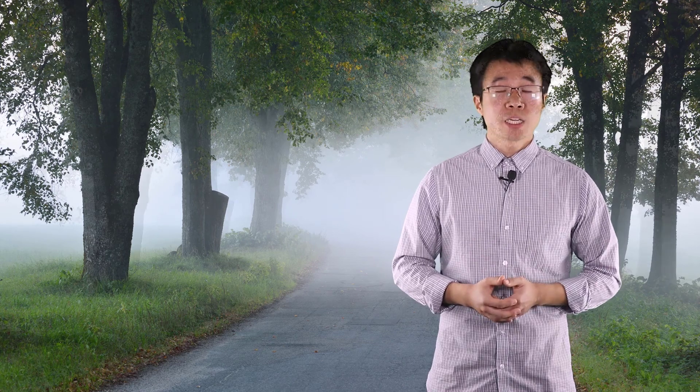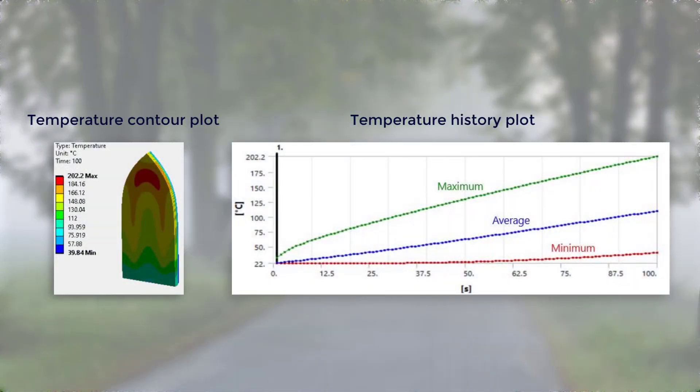Now let's look at the simulation results. With transient analysis, we can see the whole temperature history. After 100 seconds, the highest temperature in the heating element and the body rises to 200 degrees Celsius, and is still showing a tendency to increase. In the real world, an electric iron usually has a thermostat, which cuts off the circuit to avoid overheating. We can also include the handle to see if there is any noticeable temperature change, and solve a separate transient analysis to see how long it takes to cool down to an acceptable temperature that won't cause burns.